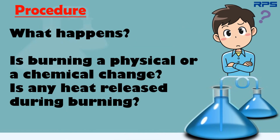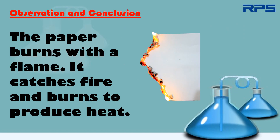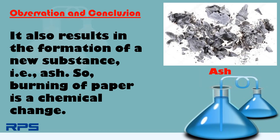What happens? Is burning a physical or a chemical change? Is any heat released during burning? You will observe that the paper burns with a flame — it catches fire and burns to produce heat. It also results in the formation of a new substance, that is ash. So we can conclude that burning of paper is a chemical change.